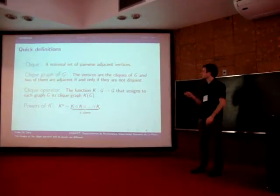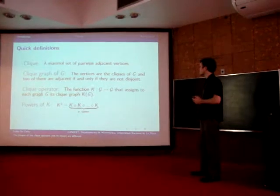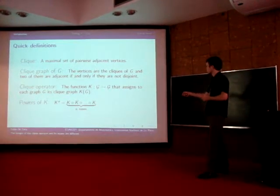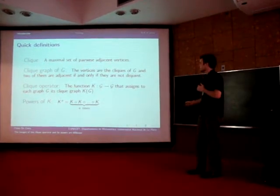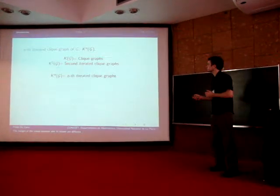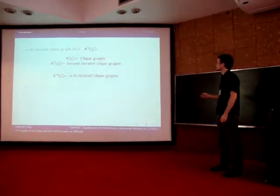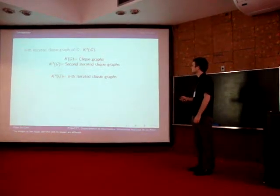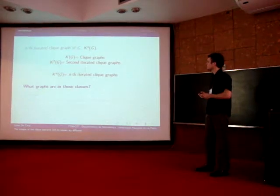The clique operator is the function K that assigns to each graph G the graph K(G). The power K to the N of the clique operator is the composition of K N times. The N iterated clique graph of G is the graph K to the N of G. K(G) is the class of clique graphs, K squared of G are the second iterated clique graphs, and so on. One can wonder what graphs are in these classes.